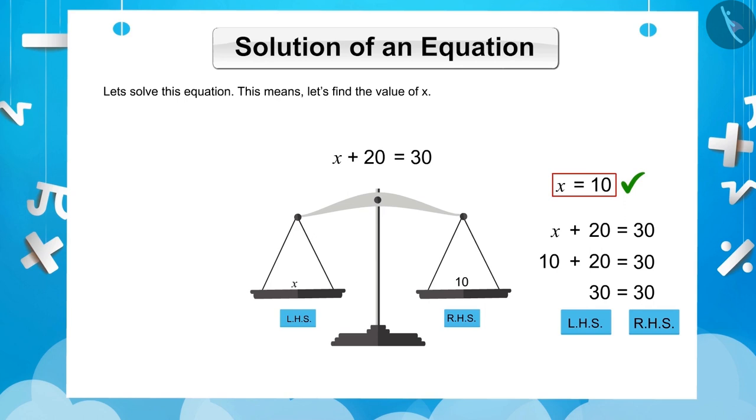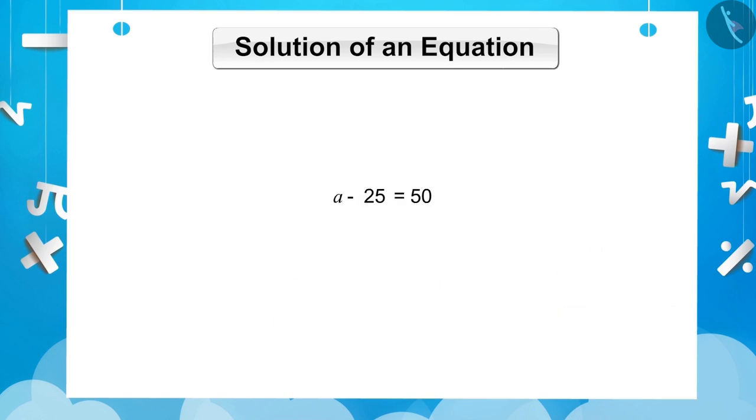Now, let us solve another equation. Can you tell us what we have to do to solve this? To solve this equation, we have to add 25 on both sides so that the equation will remain balanced. Therefore, the new LHS will be A minus 25 plus 25 and the new RHS will be 50 plus 25. Solving this, we get A is equal to 75.